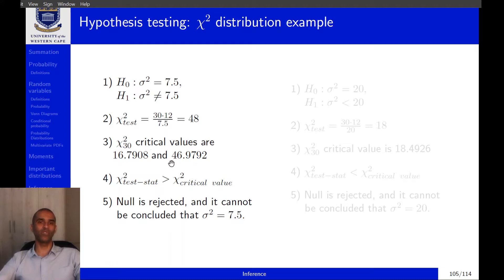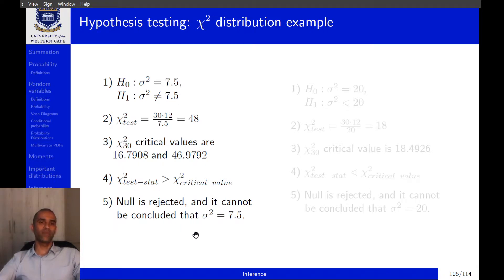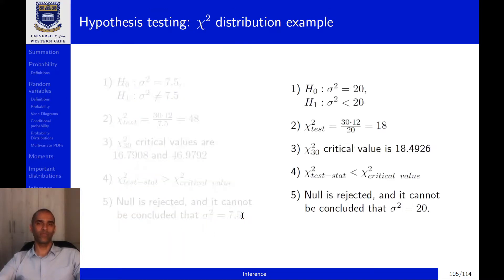Comparing the test statistic against the critical values: 48 is larger than 46.9792, which lies in the right tail. Therefore we reject the null and state that we cannot conclude the true value of sigma squared is 7.5.